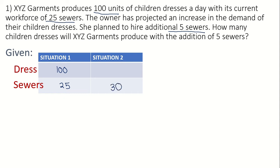How many children's dresses will XYZ Garments produce with the addition of 5 sewers? This part is unknown, so we will let the number of dresses produced by 30 sewers as X. Those will be the quantities in our table.